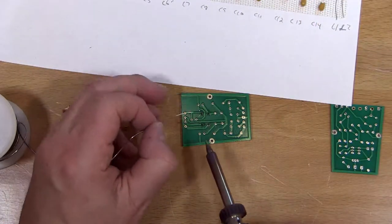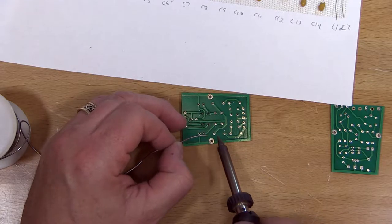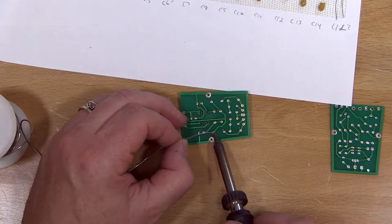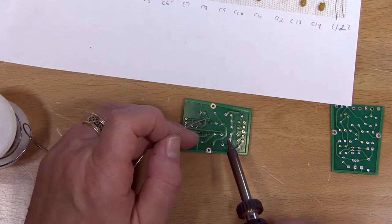Remember what's really important is that you're heating both the printed circuit board, the silver part of that, and the lead of the component. If they're not both hot, you'll get a bad solder.